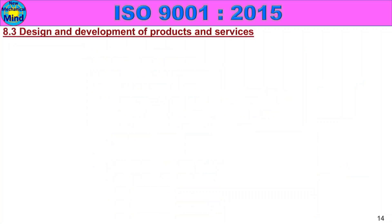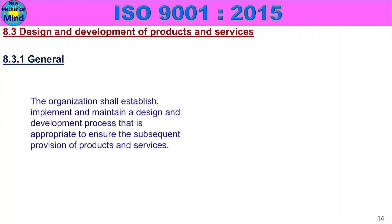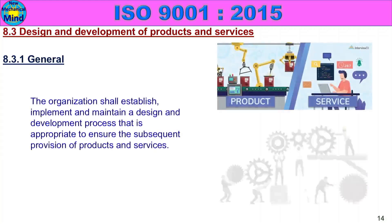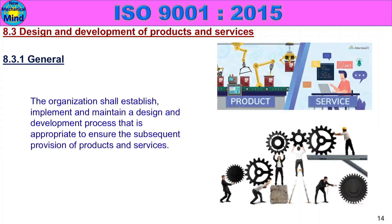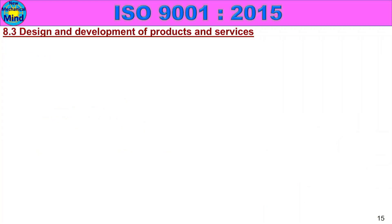First, 8.3.1 General. The organization shall establish, implement and maintain a design and development process that is appropriate to ensure the subsequent provision of products and services. One company will produce products or services through the design and development process.